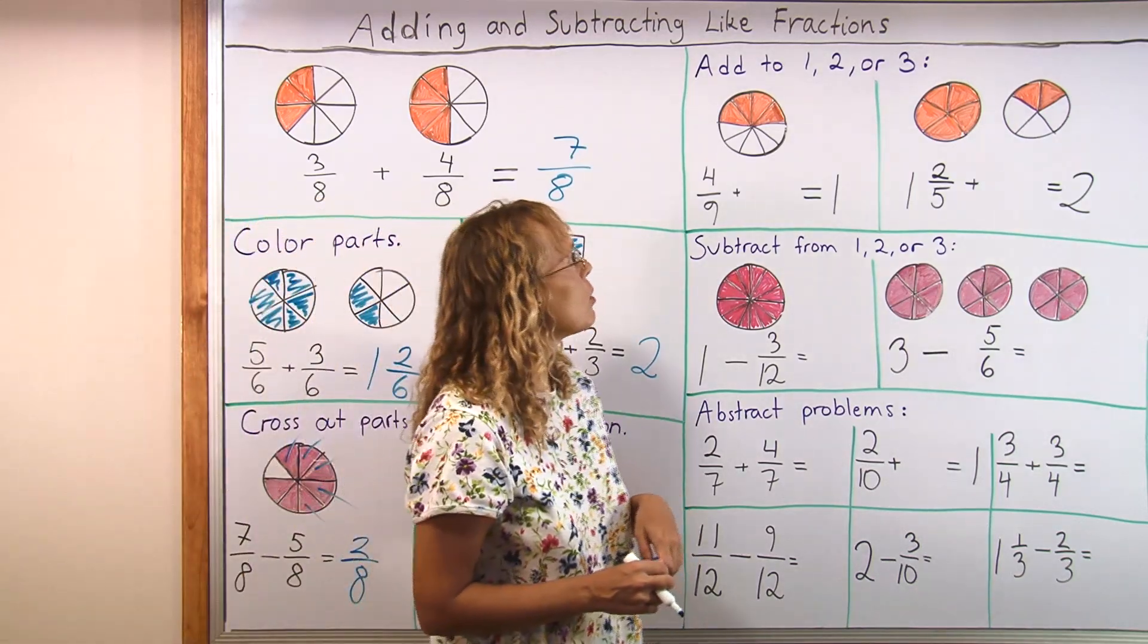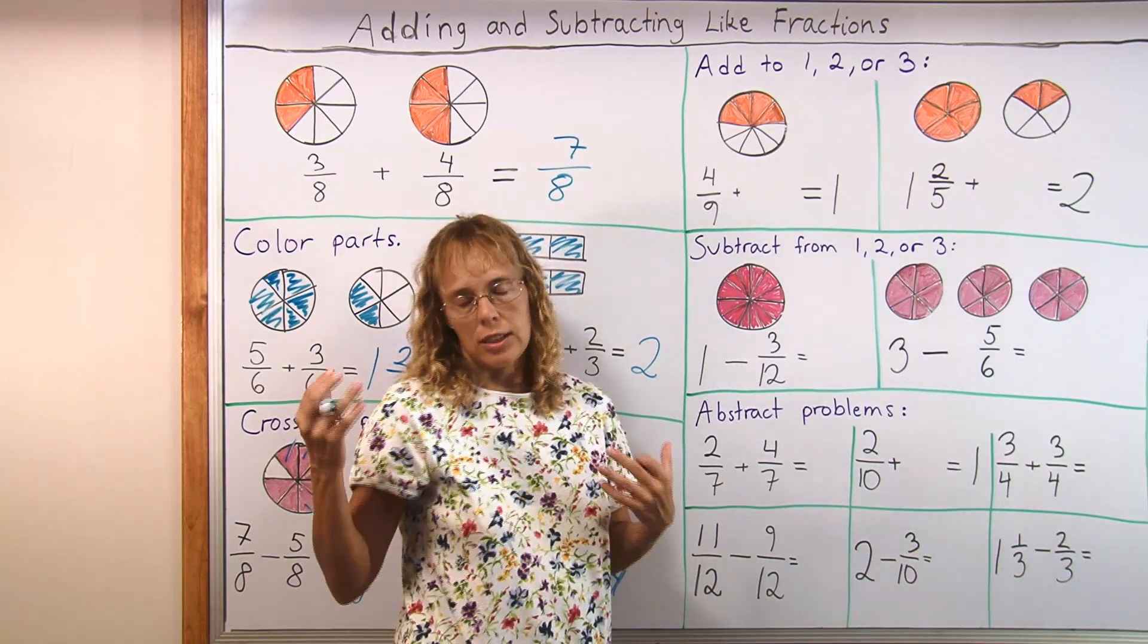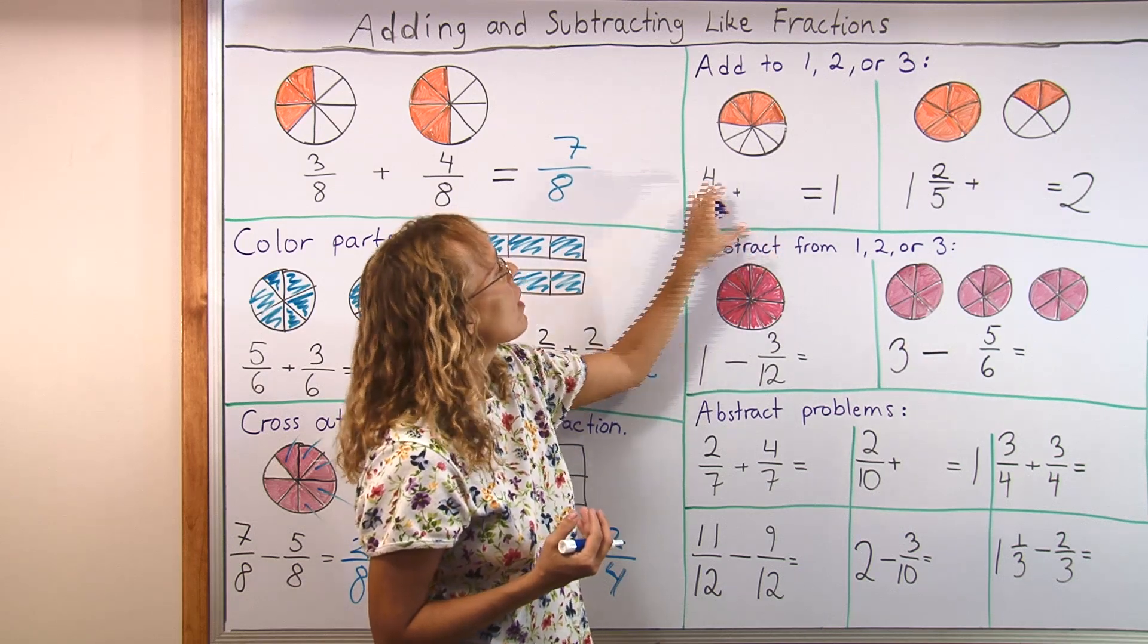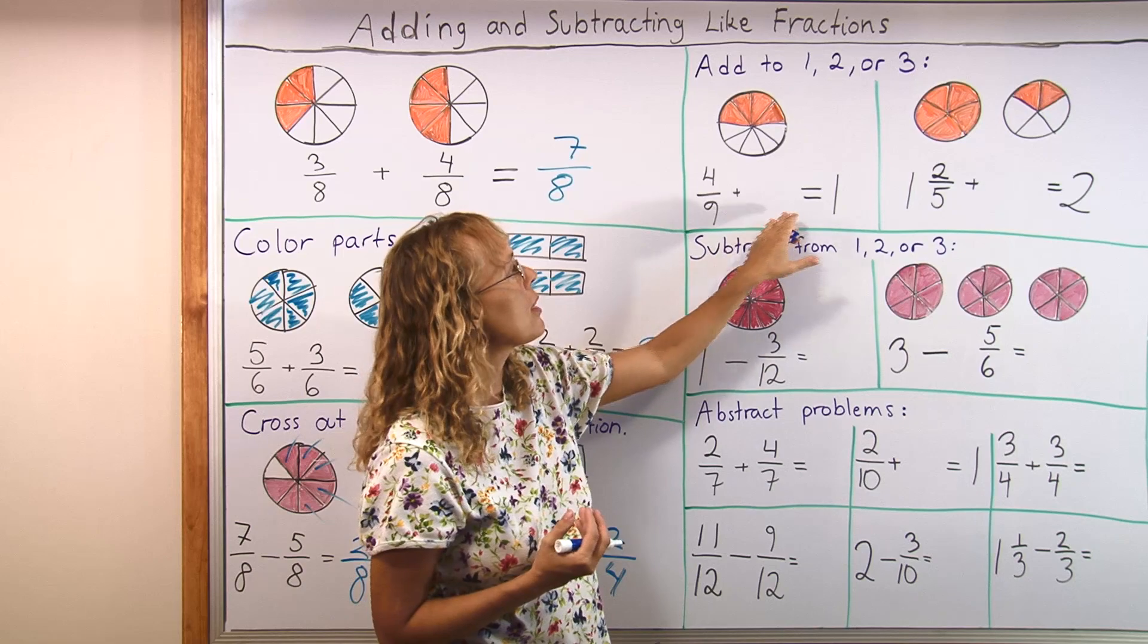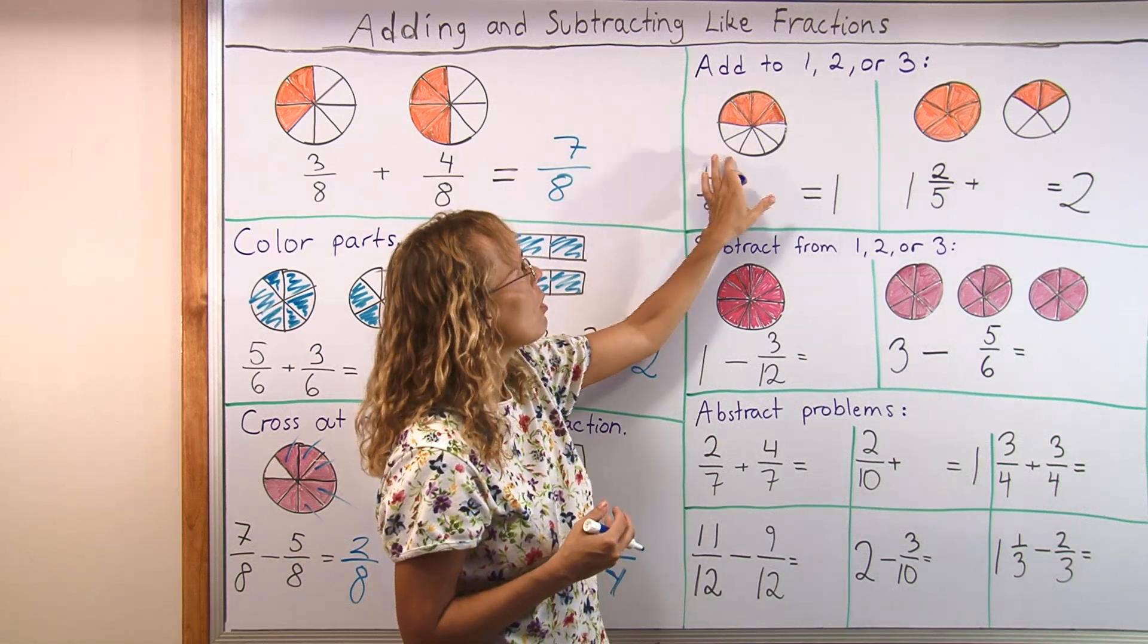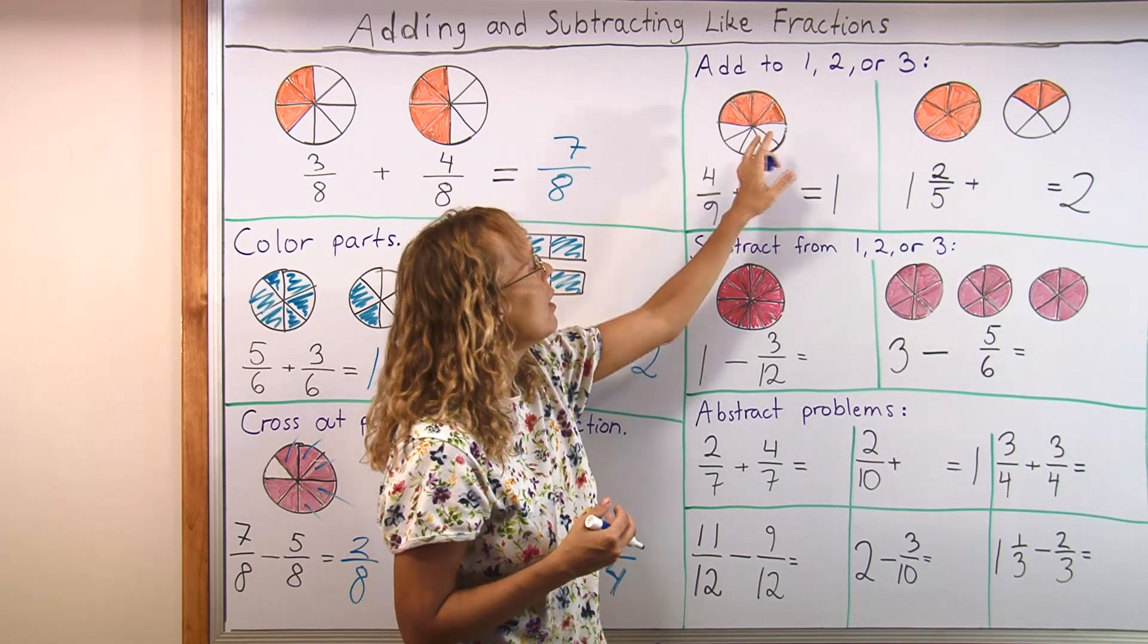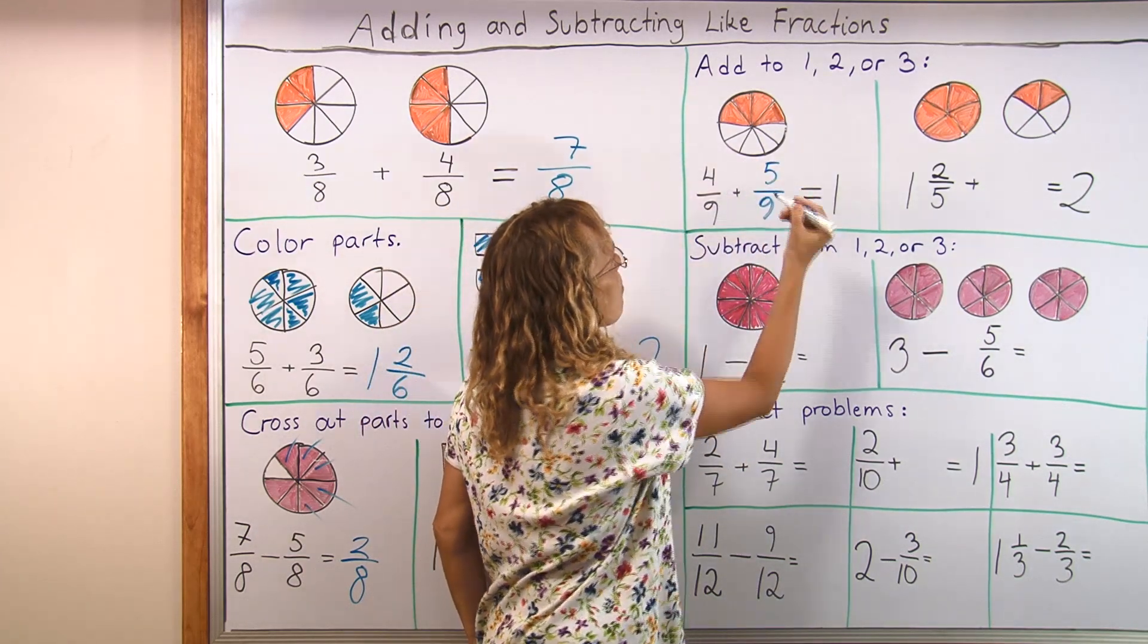Now, we are going to also look at problems that involve the whole number 1, 2, 3 and so on. Such as missing addend problems. 4 ninths plus an addend is missing equals 1. And it's a visual picture again to help the child to think 4 ninths is colored. How much more will he need to color to get the 1 whole pie? And the answer is obvious. Of course, it is 5 ninths.